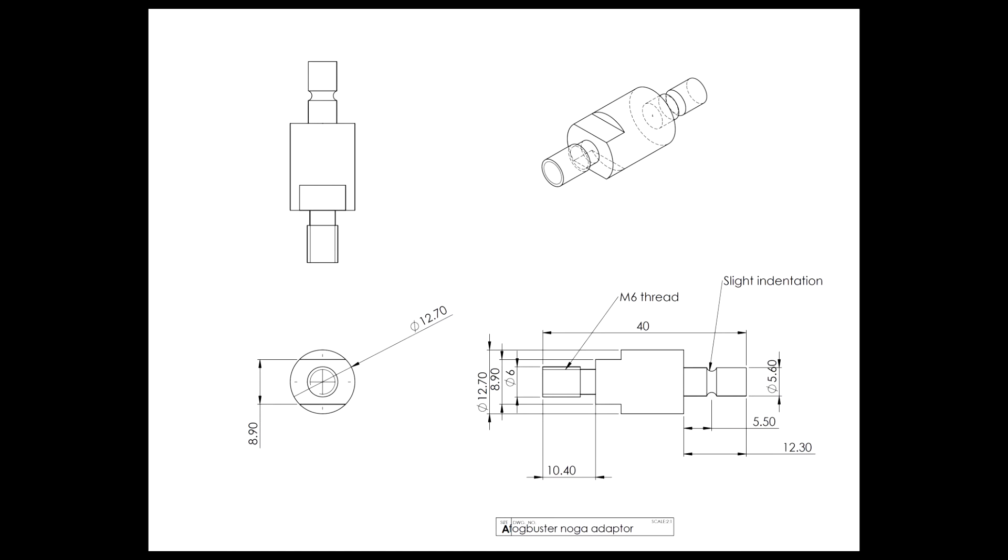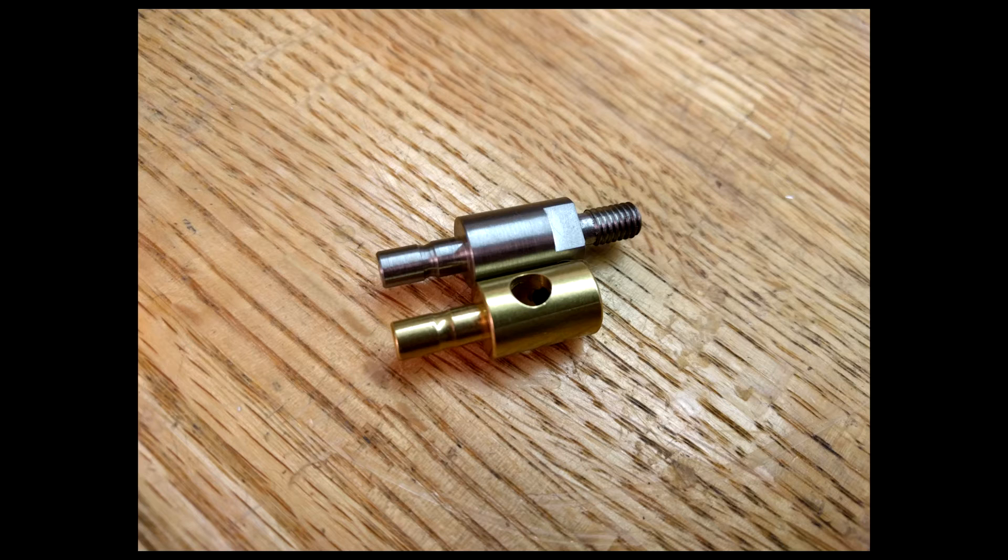This is the design for the adapter. The threaded side mounts into the Noga arm while the fog buster mounts onto the straight side. A small groove is made on the fog buster side so a set screw can seat well. Unfortunately I have no videos of the machining. I held the stock in a 5C collet on the lathe to do all the turning operations. My lathe is not able to thread currently so I increased the thread relief and used a die. The flats are made on the mill using a 5C indexer.